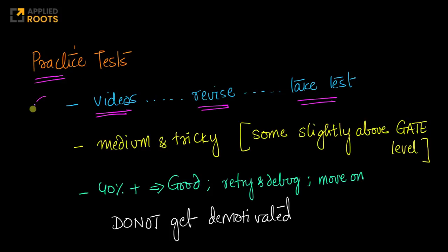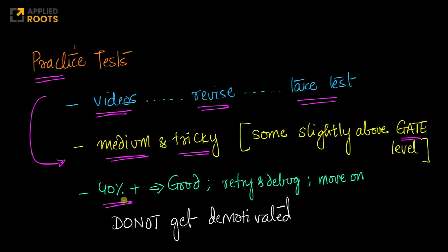Most of the questions in the practice test are at a medium level. Some of them are also tricky, and intentionally we have made some questions slightly above the GATE level. I'll give you a justification on why we have them as medium and tricky and not trivial easy questions in a minute. Now, if you're scoring 40% or more marks in the practice test, that's pretty good actually — don't get demoralized or demotivated. 40% is good because most of the questions in these practice tests are medium and tricky.